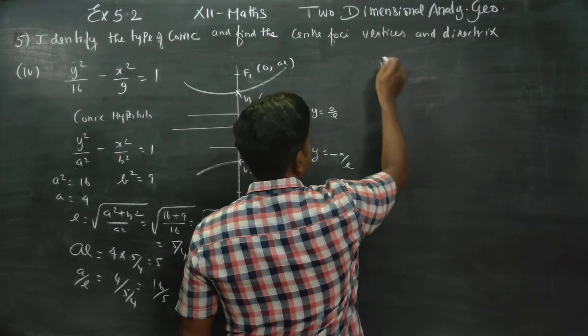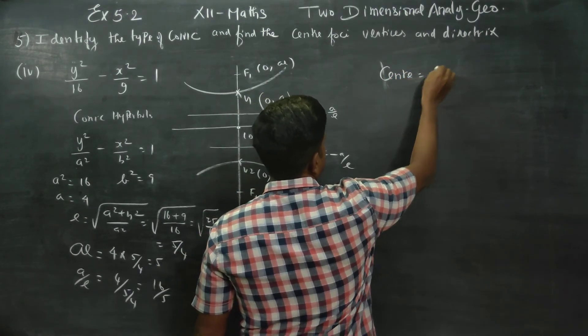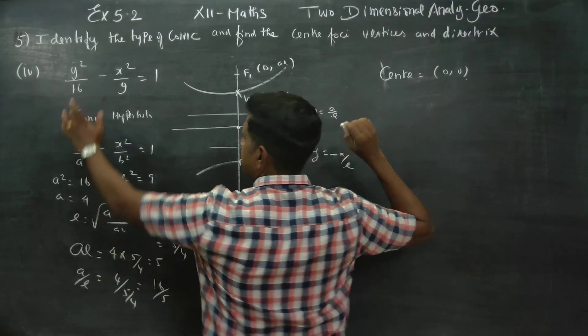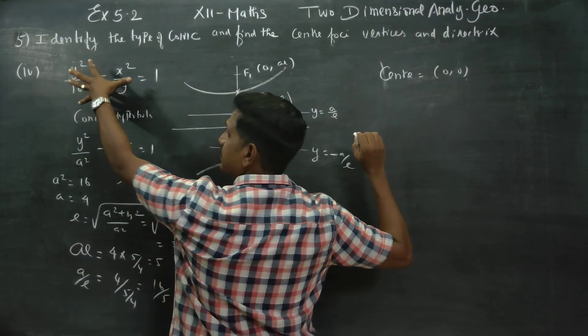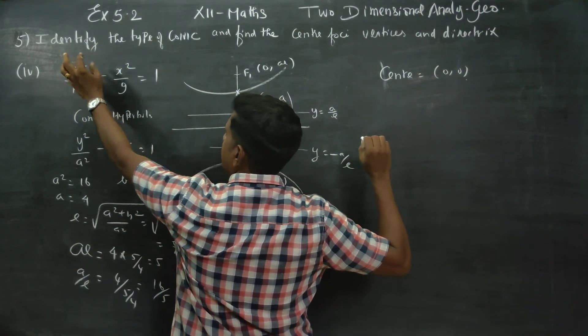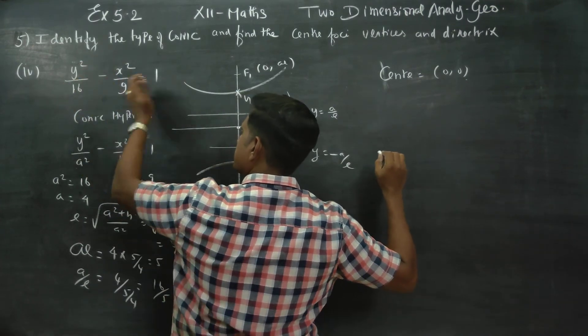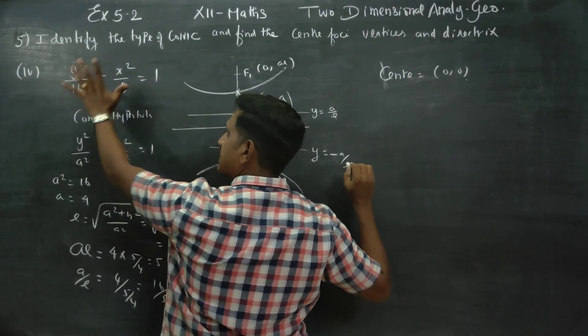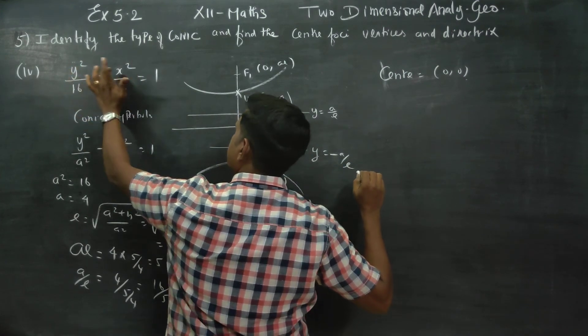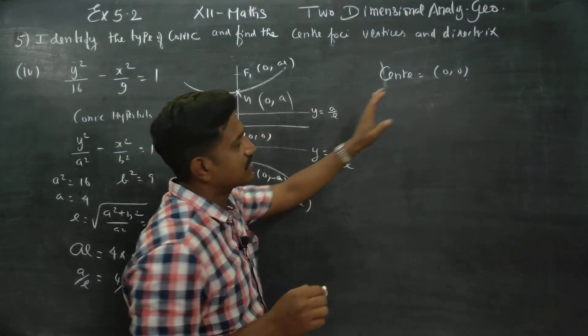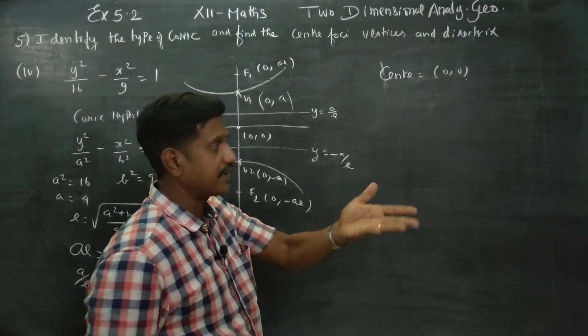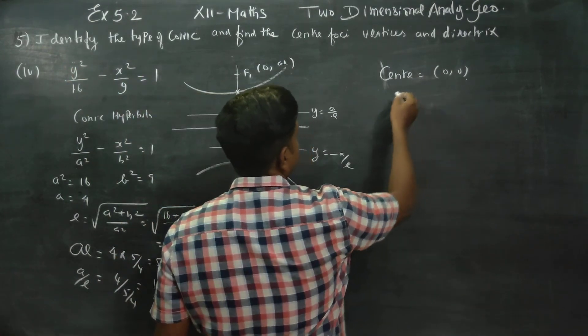What is my center? Center is 0, 0. This is standard type of the hyperbola, x² by a² minus y² by b², or y² by a² minus x² by b² equal to one standard type. For this the center is 0, 0. When H, K is placed, then it becomes H, K, but here H, K is zero so center is 0, 0.